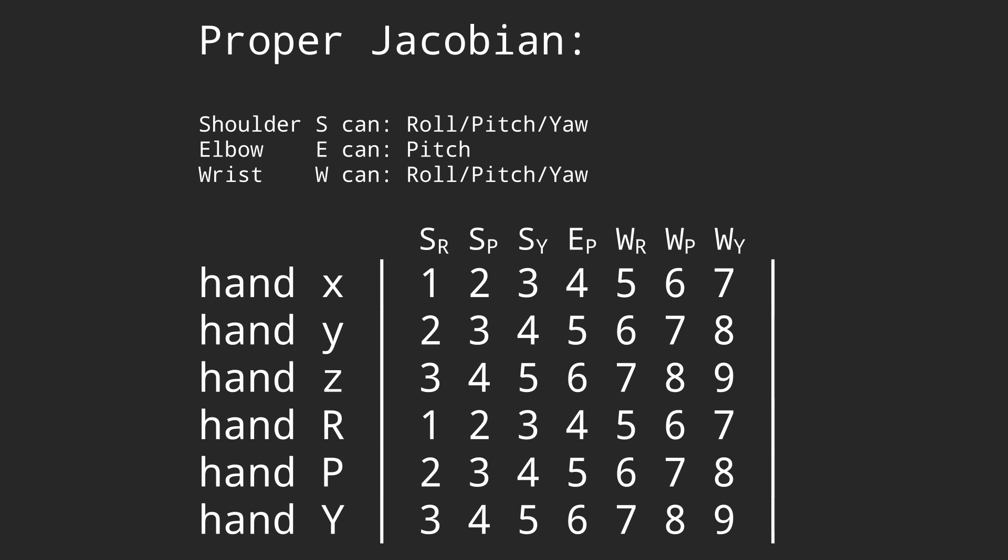For instance, a ball and socket joint would typically have 3 columns in the matrix, each representing the rotation about the x, y, and z axis respectively, while the hinge joint would only have 1 column, representing its rotational degree of freedom.